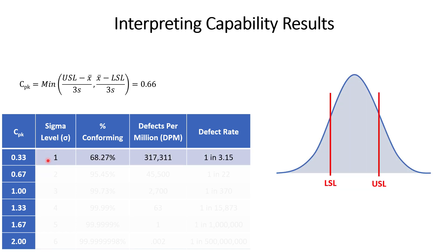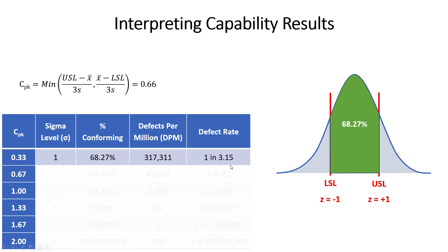For a CPK of 0.33 — plus or minus one standard deviation — 68.27% of product is conforming. Defects per million would be 317,000 nonconforming units, meaning roughly one in three products is nonconforming. If CPK doubles to 0.67 — plus or minus two standard deviations — 95.45% of the distribution is conforming, leaving 45,000 defects per million, or about one in 22 units.